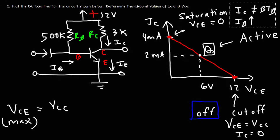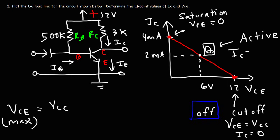In the active region, IC is proportional to IB according to this equation. When IB doubles in value, IC will double proportionally. In the active region the transistor functions very well as an amplifier. But if you bias the transistor at the midpoint, the amplifier will work at its best.